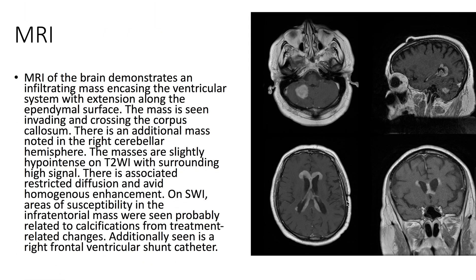On MRI, we see infiltrating masses encasing the ventricular system with extension along the ependymal surface. The mass is seen invading and crossing the corpus callosum. There's an additional mass noted in the right cerebellar hemisphere.